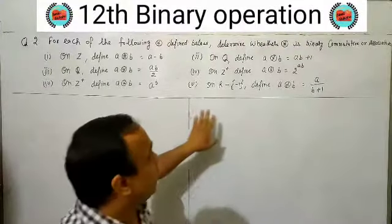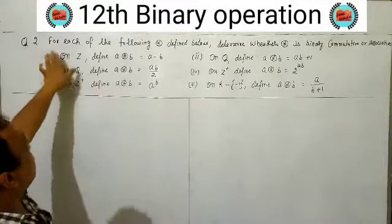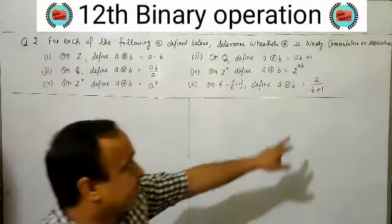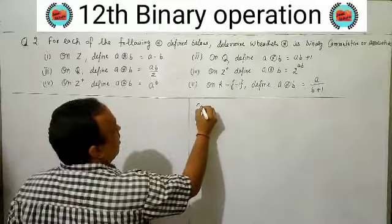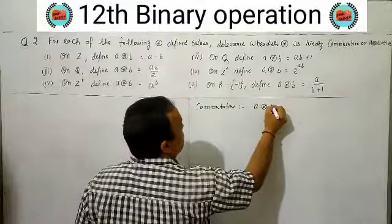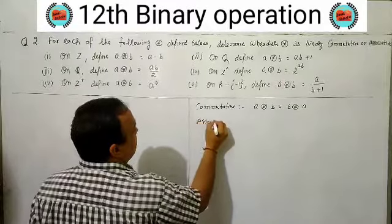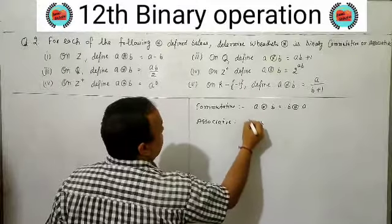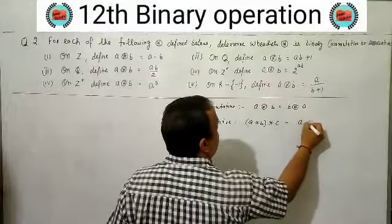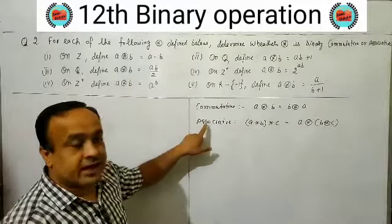Welcome students. In today's lecture we will do Question 2, Exercise 1.4 - Binary Operations. For each of the following operations defined below, determine whether the operation is binary, commutative, or associative. We need to check: commutative means a★b = b★a, and associative means (a★b)★c = a★(b★c).